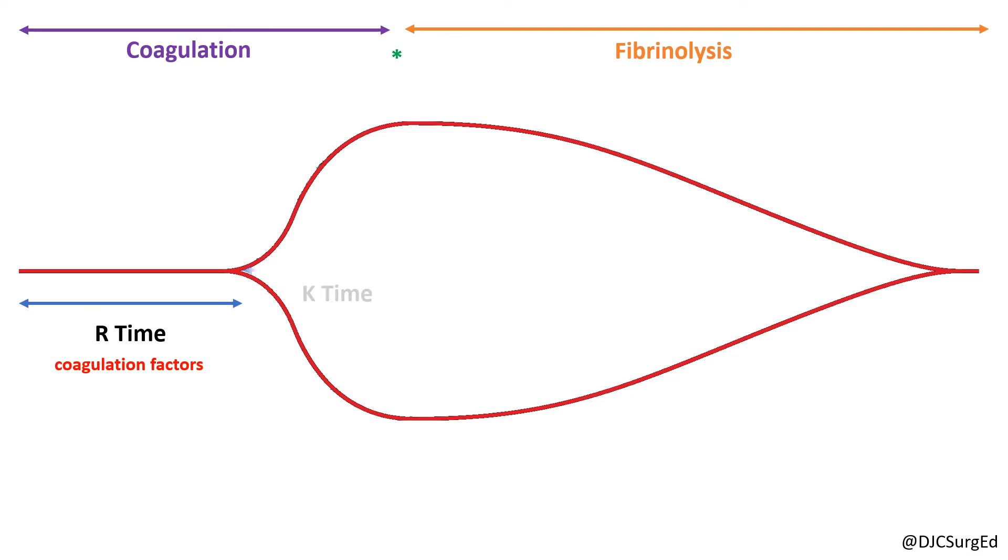The K time is a measurement of the time it takes for a clot to reach 20 millimeters in amplitude. And the alpha angle is the tangent to the curve at the K time and represents the speed of clot buildup.